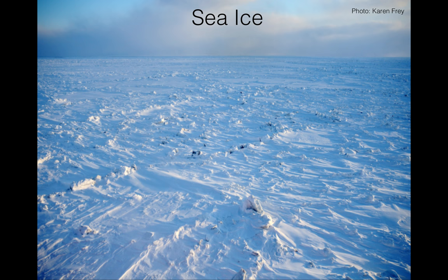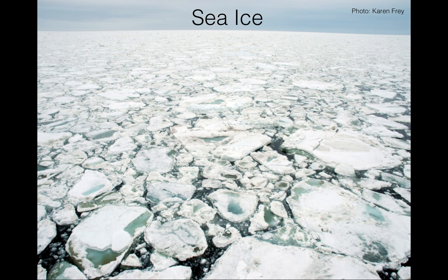Sea ice also changes the property of the ocean — it's more reflective. This also shows sea ice in a different month. As you can see, depending on the month and the season and timing, the properties of the sea ice also change. You can see the ocean as the sea ice starts to crack.